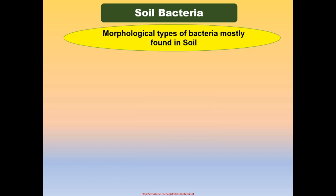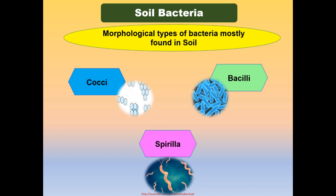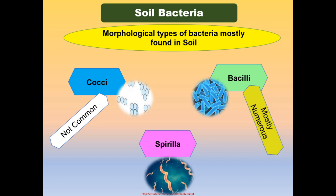Morphological types of bacteria mostly found in soil include Cocci, Bacilli, and Spirilla. Bacteria with Cocci morphology are not common in soil, whereas Bacilli are found as the most numerous due to endospore formation. Spirilla are found in very small numbers in soil.